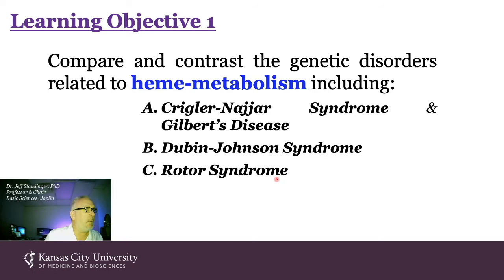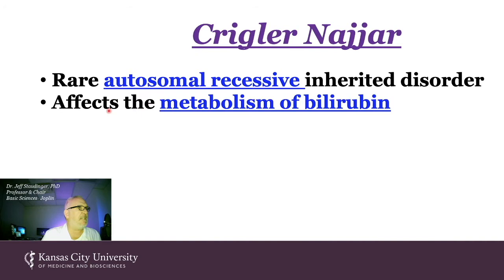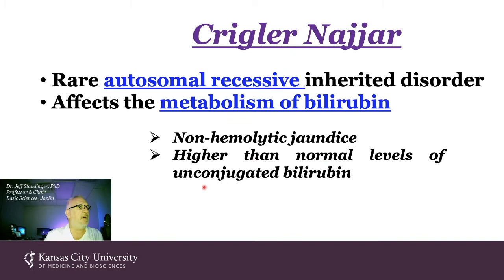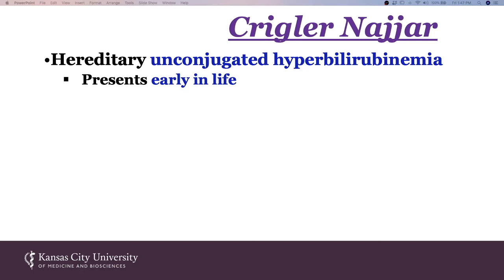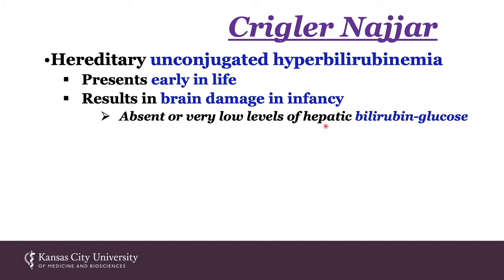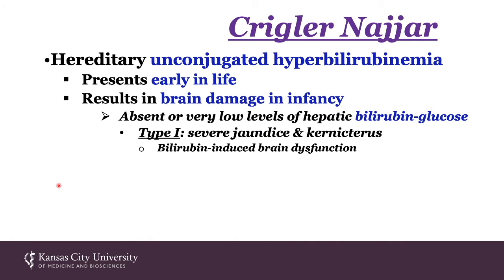Krigler-Nijaar is a rare autosomal recessive inherited disorder affecting the metabolism of bilirubin, characterized by non-hemolytic jaundice and higher than normal levels of unconjugated bilirubin in serum. A typical vignette: an infant brought to the pediatrician with yellow skin, behavioral changes, and parents who are first cousins. There are two types — type 1 with severe jaundice and kernicterus, and type 2 which is less severe, also known as Arias syndrome.